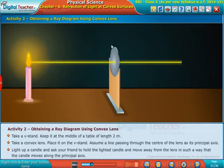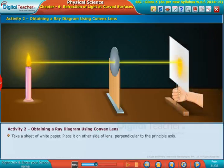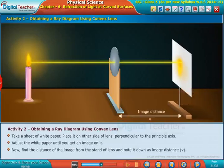Move away from the lens in such a way that the candle moves along the principal axis. Take a sheet of white paper and place it on the other side of the lens, perpendicular to the principal axis.